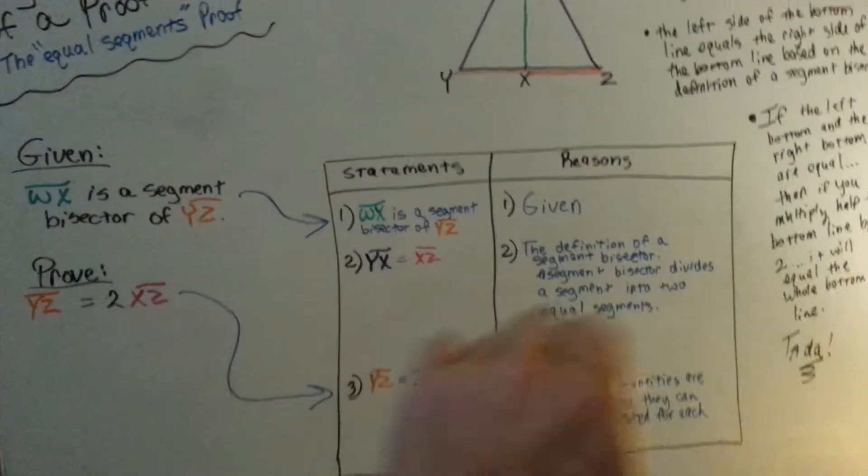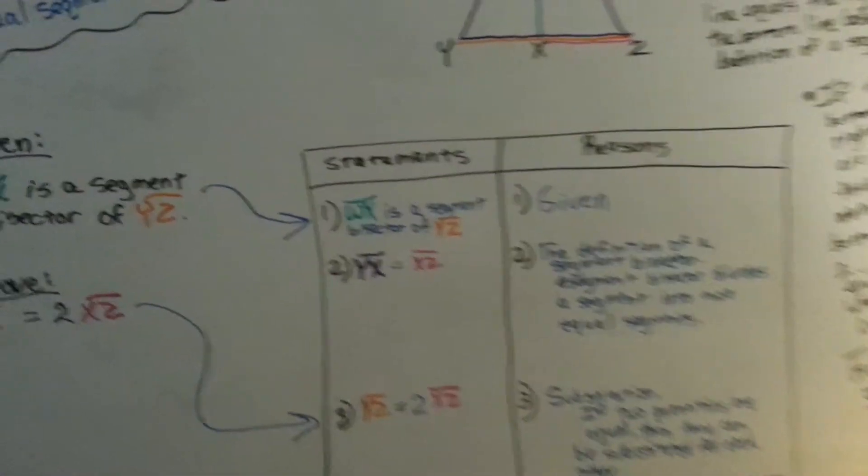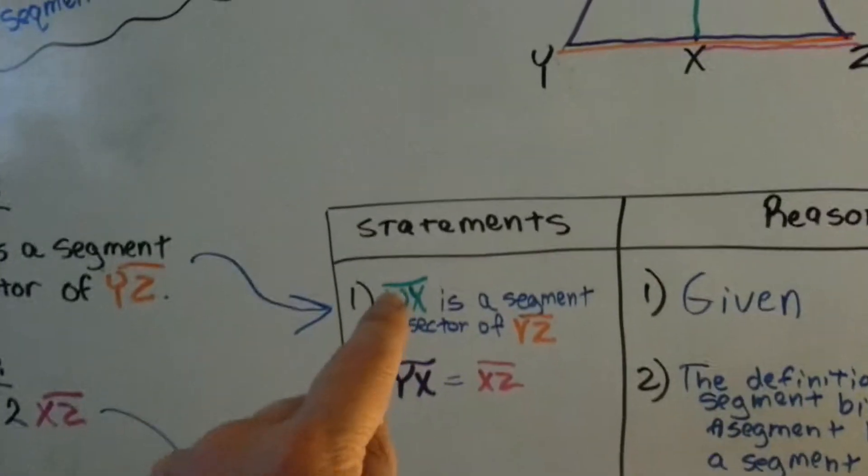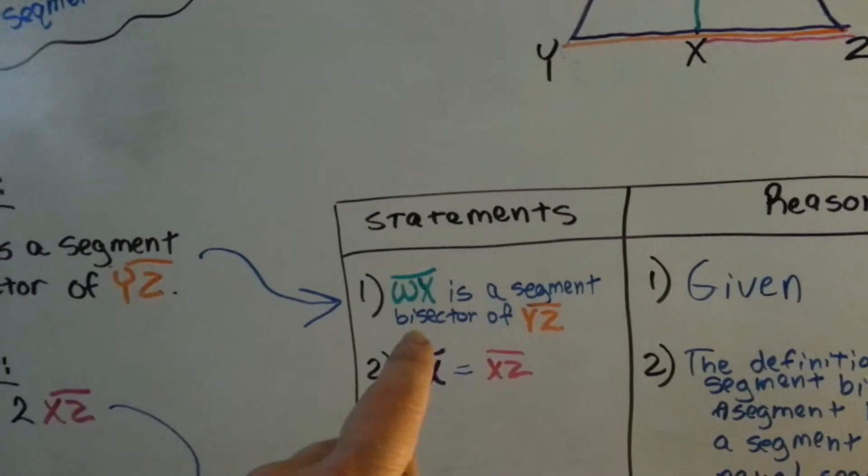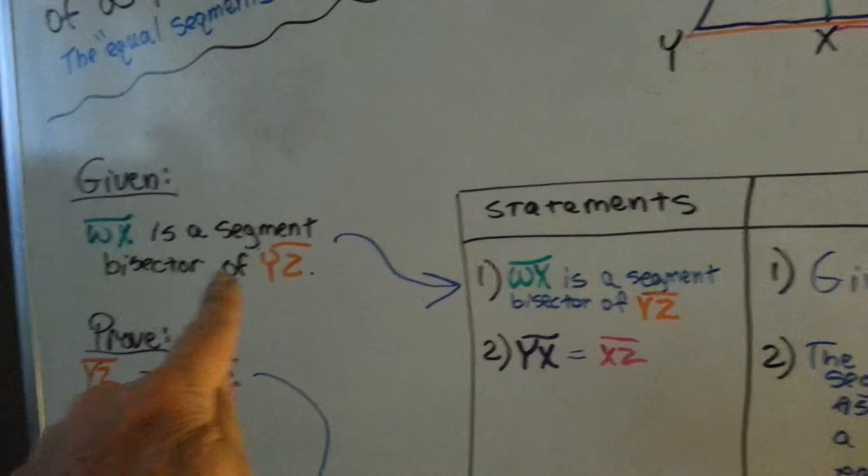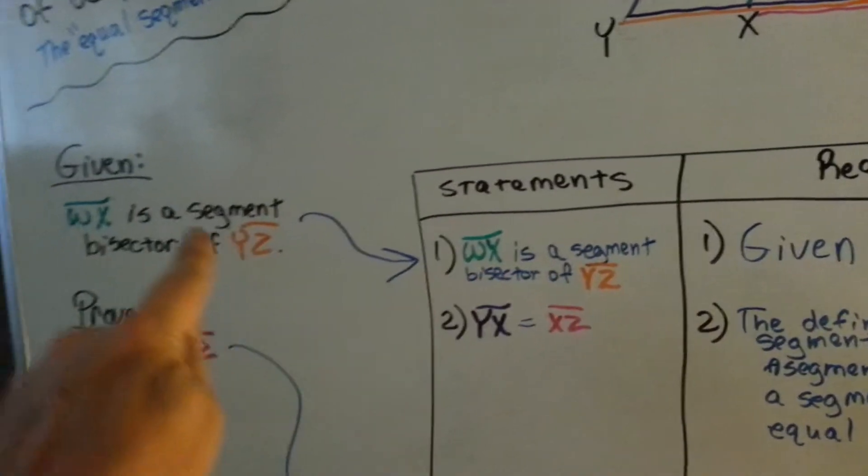Here are our statements, here are our reasons, and here we go. We've got the green wx is a segment bisector of yz. That's given.